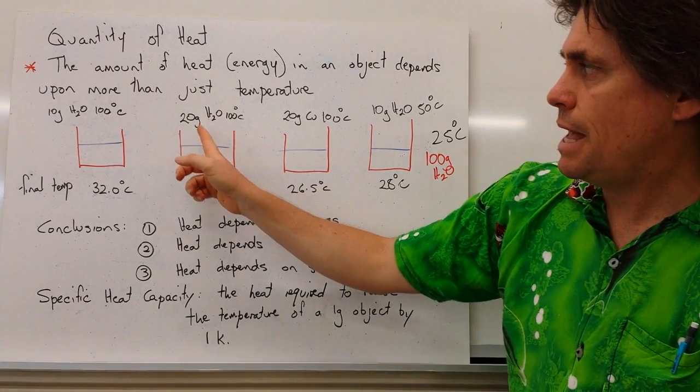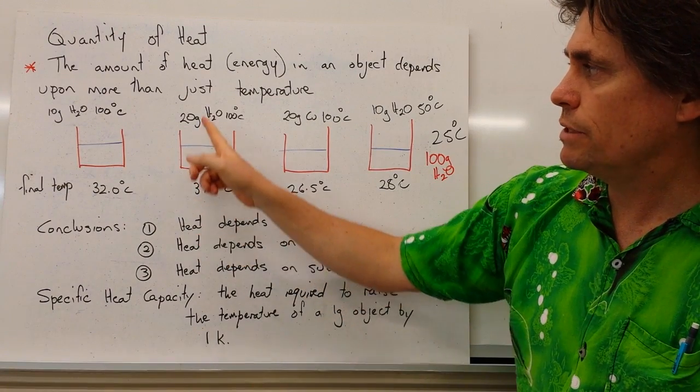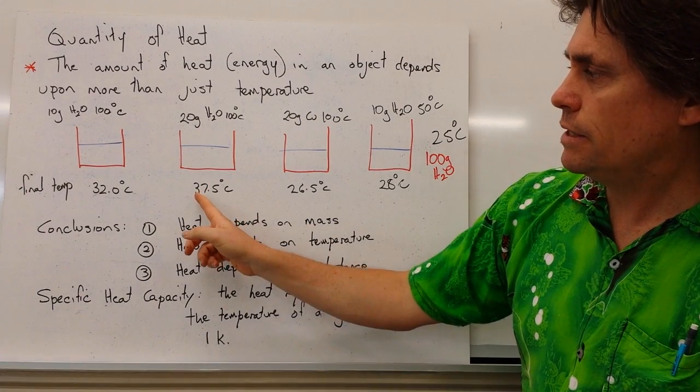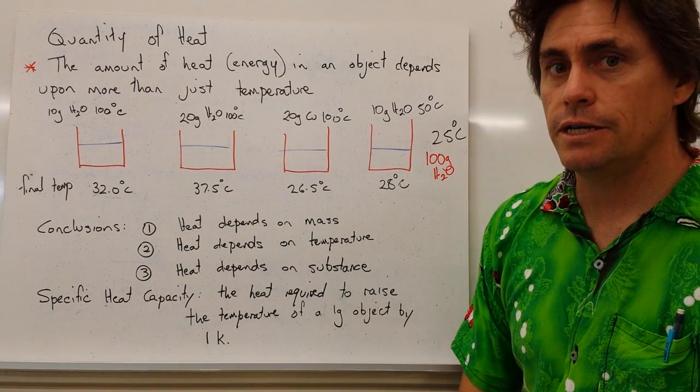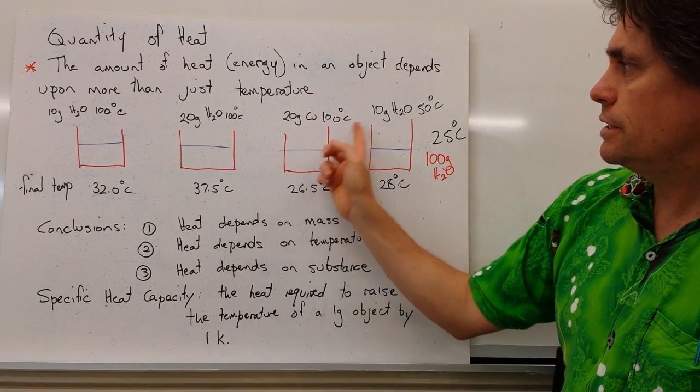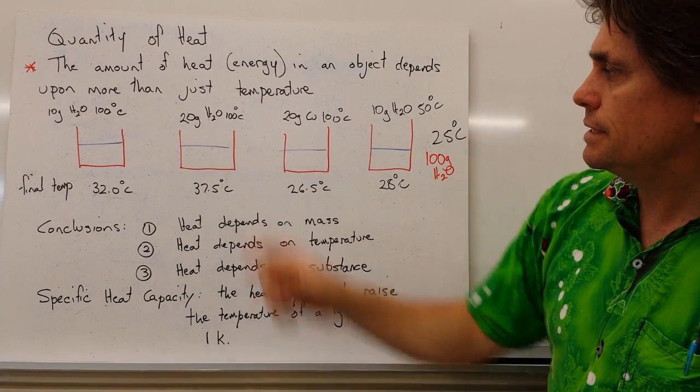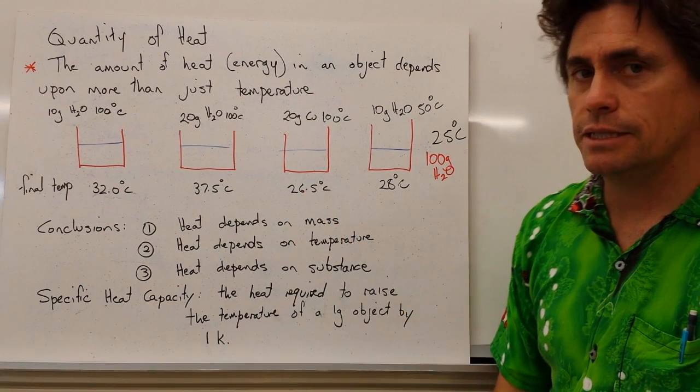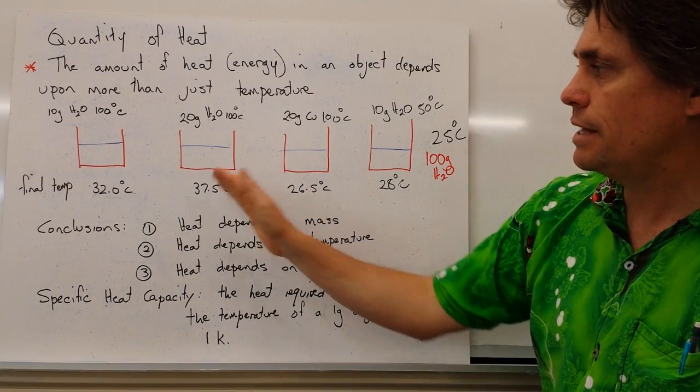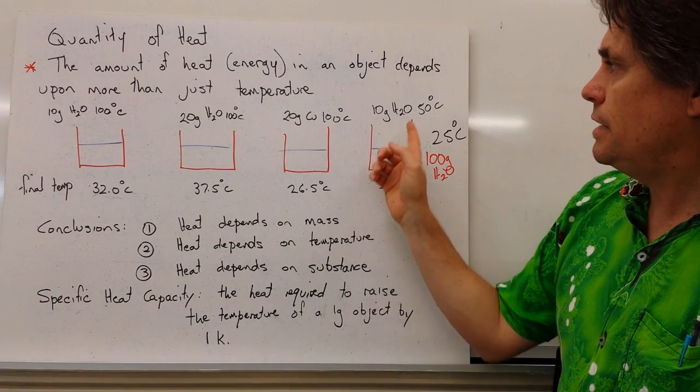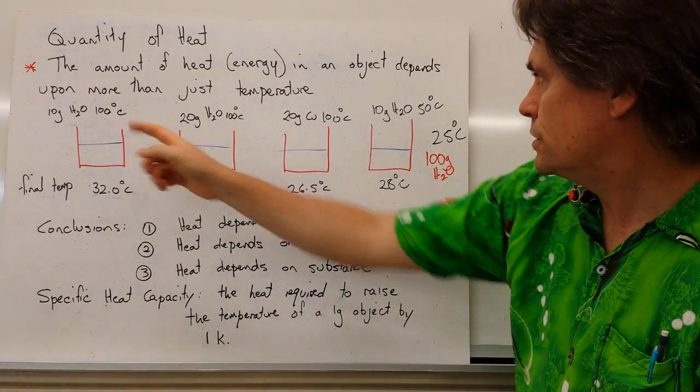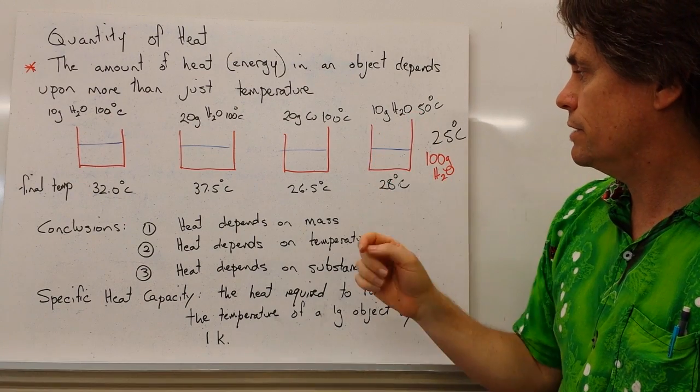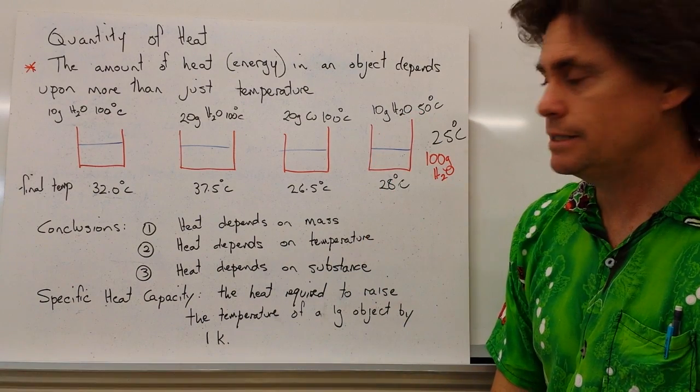If we double the mass, same temperature, and it's water, we find that our final temperature will be 37 and a half degrees. If we change the substance but have the same mass as the second one, we find that our final temperature is 26 and a half degrees. So lower than the second one. And finally, if we start with the same mass as the first one, but we lower the temperature to 50 degrees, this time our temperature is 28 degrees C.